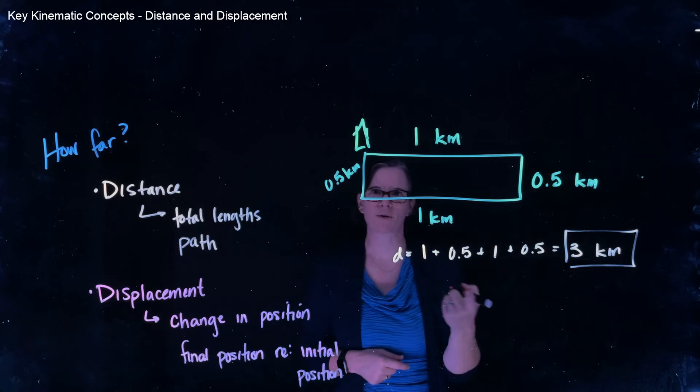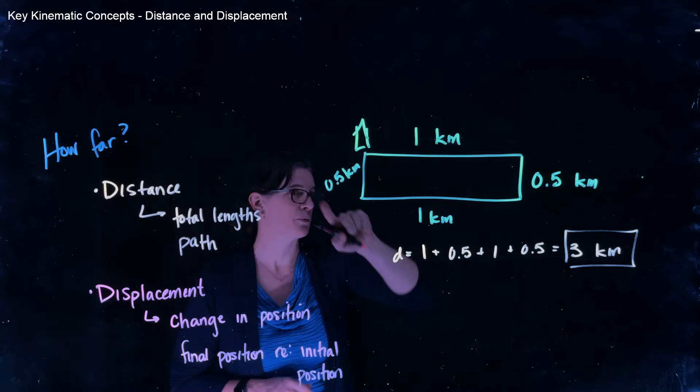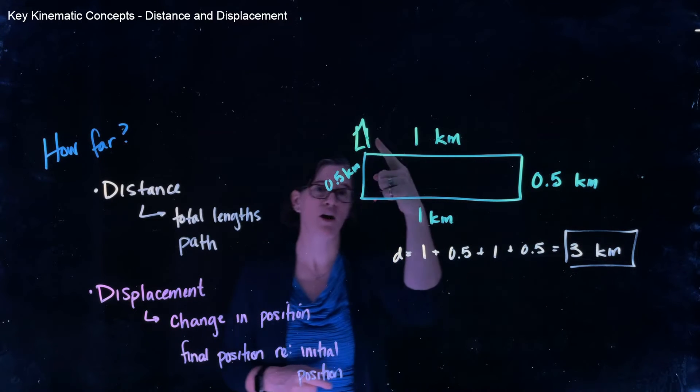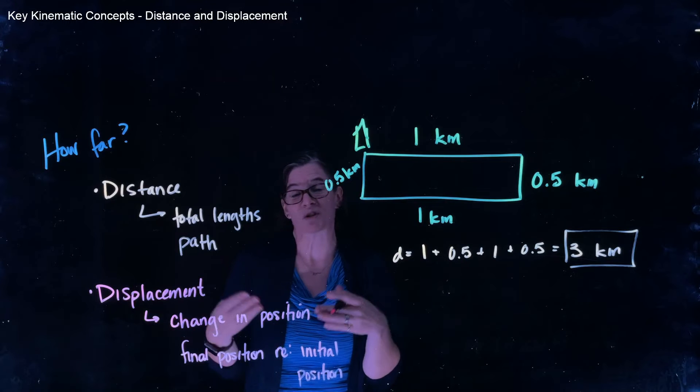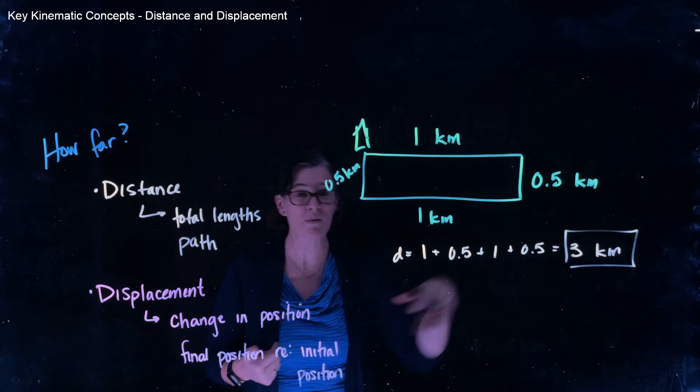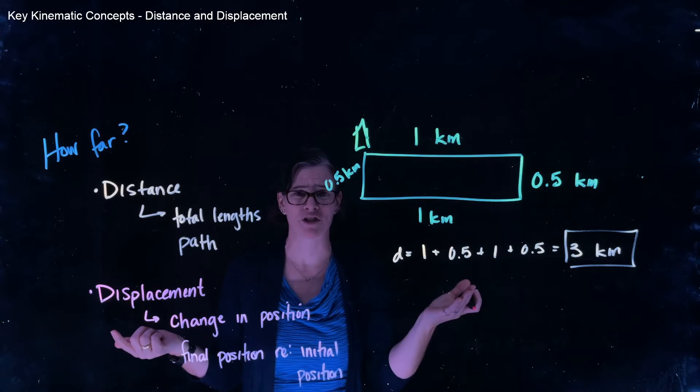So if we go back to our example of the farmer, she started at her farmhouse. She walked all the way around her farmyard, and she ended up back at her farmhouse. So her change in position over the motion that I care about didn't change. She ended up exactly back where she started.